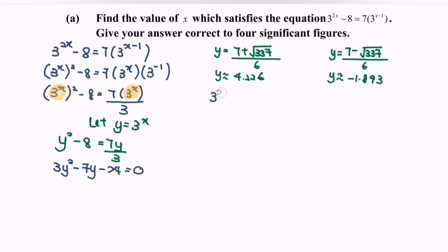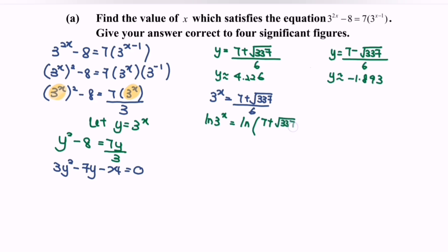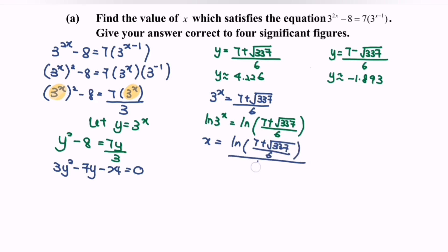So here we have 3 to the power of x equal to 7 plus square root of 337 over 6. In order to find the value of x, we take the natural log of both sides. So we have ln of 3 to the power of x equal to ln of bracket 7 plus square root of 337 over 6. The value of x will be equal to ln of bracket 7 plus square root of 337 over 6, divided by ln 3.